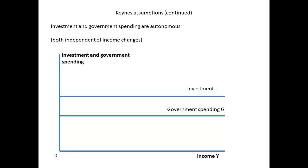The next assumption is that investment and government spending are independent of income changes. Government spending is determined by government policy and business investment in the short term by business expectations. So if both are considered independent of national income, they can be represented as straight lines. A change in income will not produce a change in government spending or investment.